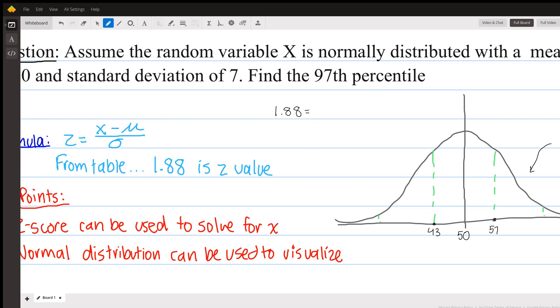So we're solving for x, so we're going to leave that minus the mean, which we know is 50, and then divide it by the standard deviation of 7, and then we're just going to solve.